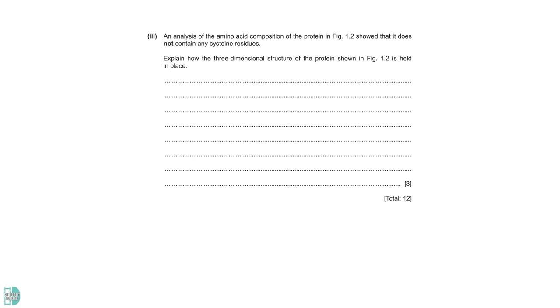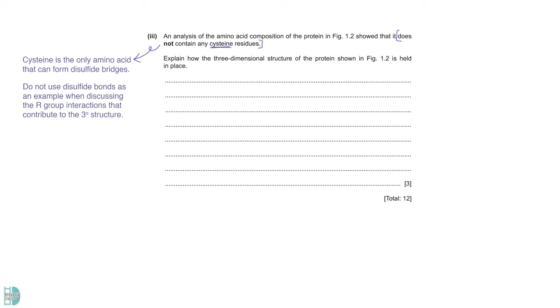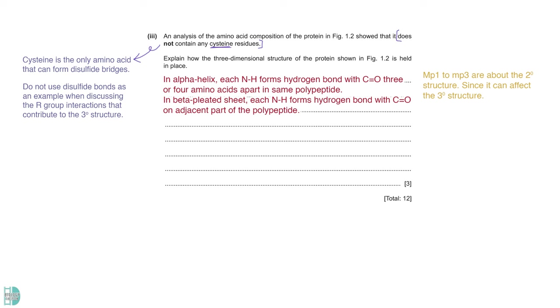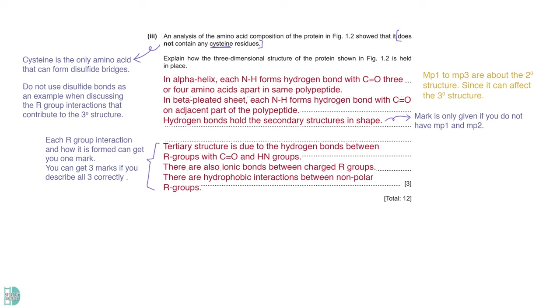Number 3, explain how the three-dimensional structure of the protein shown in figure 1.2 is held in place. There is one very important thing you need to see in the question. Cysteine is the only amino acid that can form disulfide bridges. Since this protein does not have it, please do not use disulfide bonds as an example when discussing the R group interactions that contribute to the tertiary structure. The first three points are about the secondary structure, as it can affect the tertiary structure. Marking points 4 to 6 are the more important points. Each R group interaction contributes to the tertiary structure, and the description of how they are formed will give you a mark.